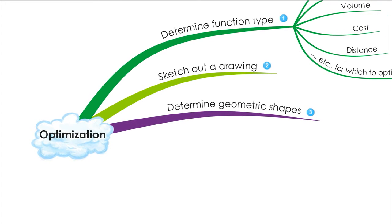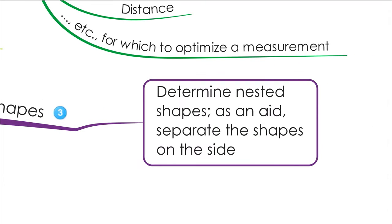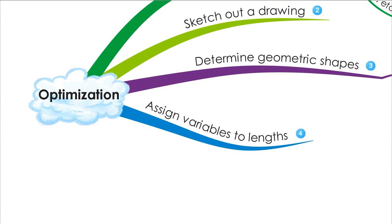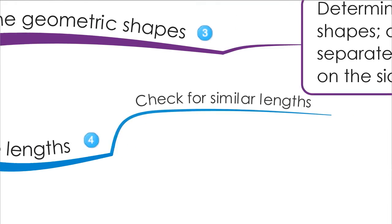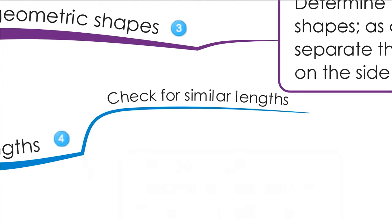The next thing you're going to want to do is determine the geometric shapes you're dealing with. If you have any that are nested, you're going to want to separate them. After that, assign variables to those lengths — check for similar lengths because similar lengths share the same variable.